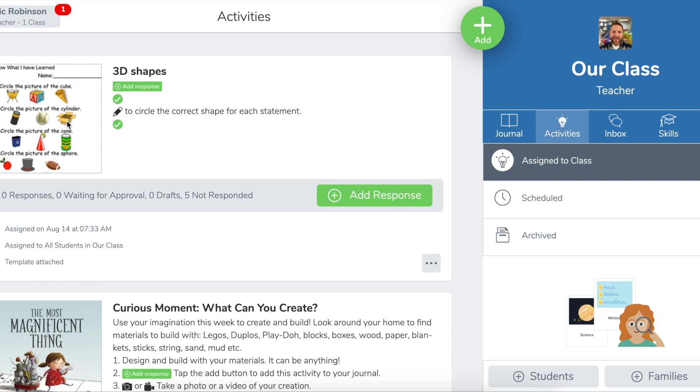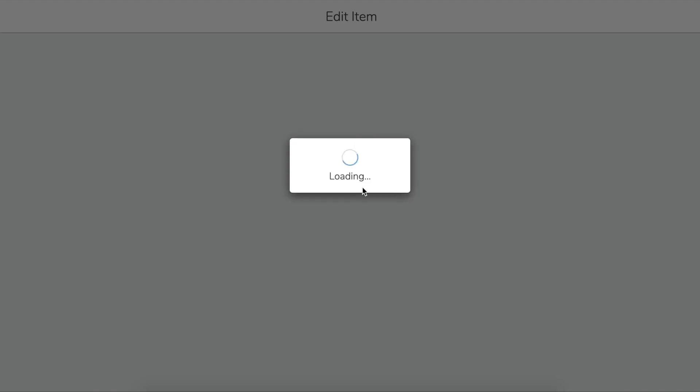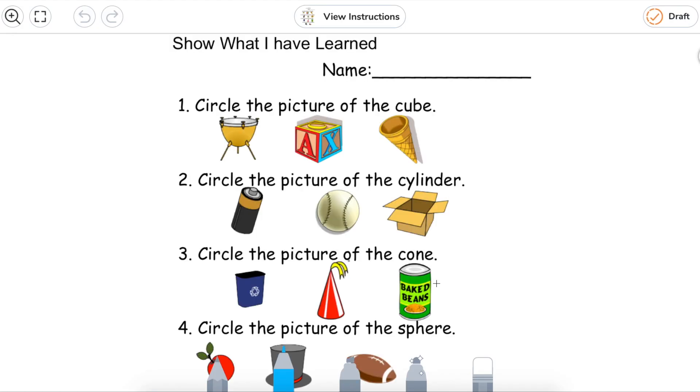Okay, so I'm gonna switch to my student view here and I'm gonna have this student respond to this template. So it says circle the picture of the cube and let's say my student gets that one just fine. But for the next one, for the picture of the cylinder, maybe they make an error, and then the rest of them maybe they do just fine.